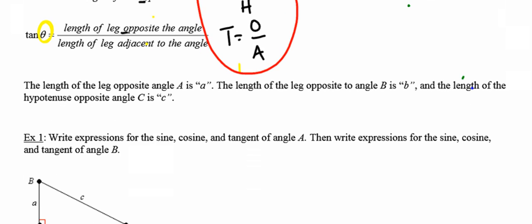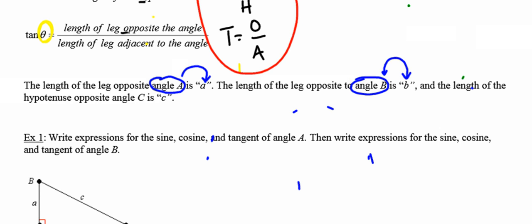In any right triangle, the length of the leg opposite angle A is going to be referred to as side a. Notice that when we talk about angle A, it's with a capital letter; when we talk about side a, it's a lowercase letter. Likewise, the length of the leg opposite angle B is side b. Angle B is referred to with a capital letter, side b with a lowercase letter. And the length of the hypotenuse, which is opposite angle C, is side c — notice the difference between angle C (capital) and side c (lowercase).